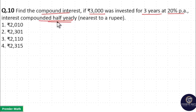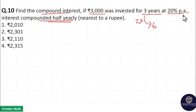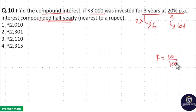Half yearly means every 6 months interest is added to the principal. Now 3 years means a total of 6 half years, and 20% per annum means for 1 year it is 20%, so for a half year it is 10%. So rate equals 10%, meaning if 10 parts is the principal, then 1 part is the interest generated out of it.